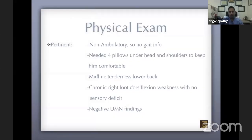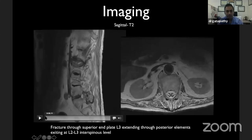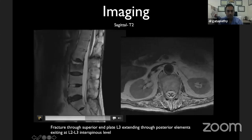The pertinent positives on physical exam: the patient was non-ambulatory due to difficulty getting up and walking. He needed almost four pillows to support his head and shoulders to stay comfortable. He had midline tenderness right over the fracture site, some chronic foot weakness, but no sensory deficits and no upper motor neuron findings. On admission, he underwent advanced imaging with an MRI.